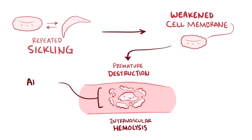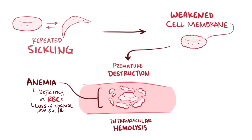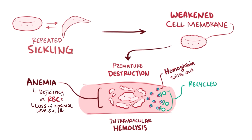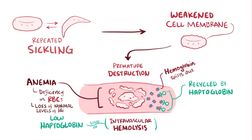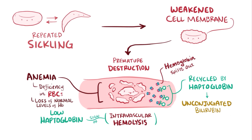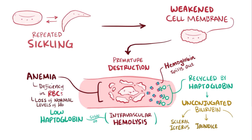This destruction of red blood cells not only leads to anemia, which is a deficiency in red blood cells or loss of normal levels of hemoglobin, but also means a lot of hemoglobin spilling out. Free hemoglobin in the plasma is bound by a molecule called haptoglobin and gets recycled, which is why a low haptoglobin level is a sign of intravascular hemolysis. Recycling of that heme group yields unconjugated bilirubin, which at high concentration could cause scleral icterus, jaundice, and bilirubin gallstones.